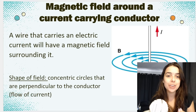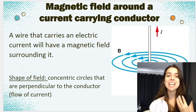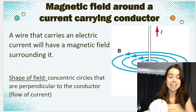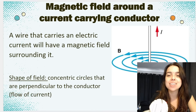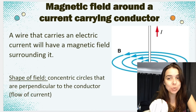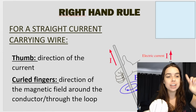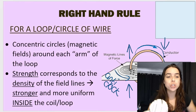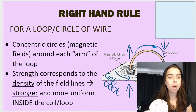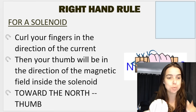In the previous video we learned that a wire that carries an electric current will have a magnetic field surrounding it. We also had a look at the right hand rule and how to apply it for a straight current-carrying wire, as well as a loop or circle of wire and for a solenoid. So if you missed that video, check out the link in the description box below.